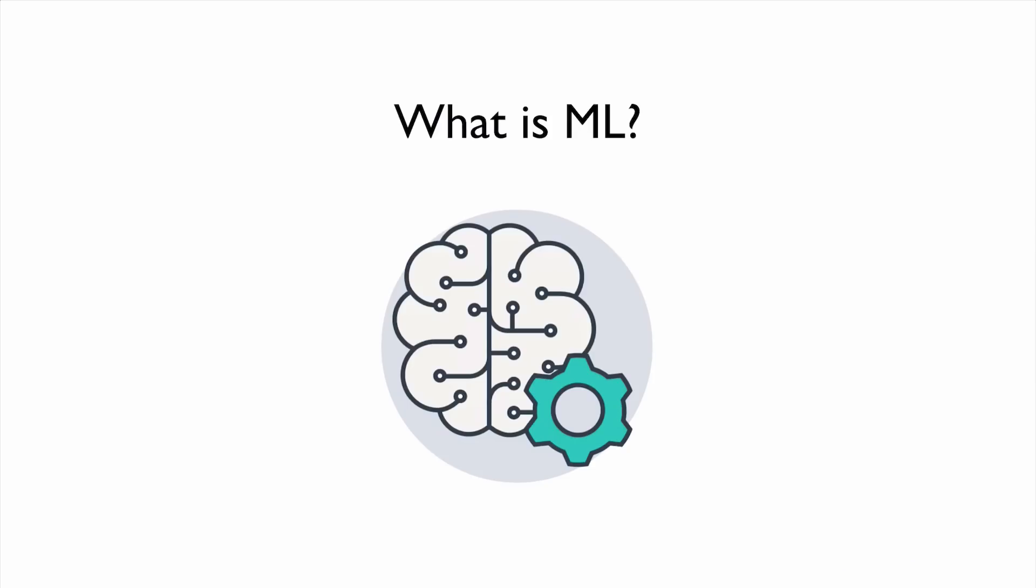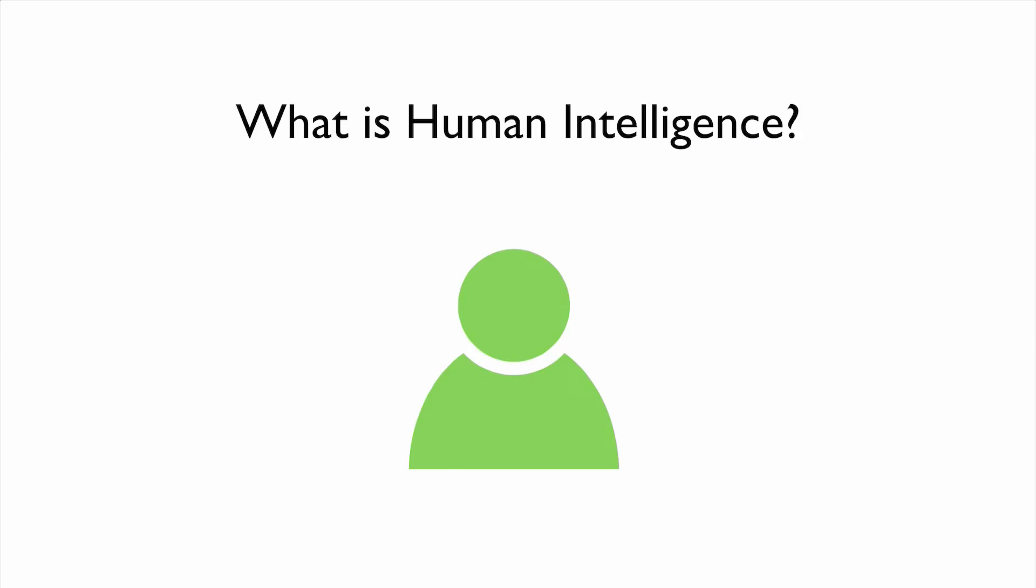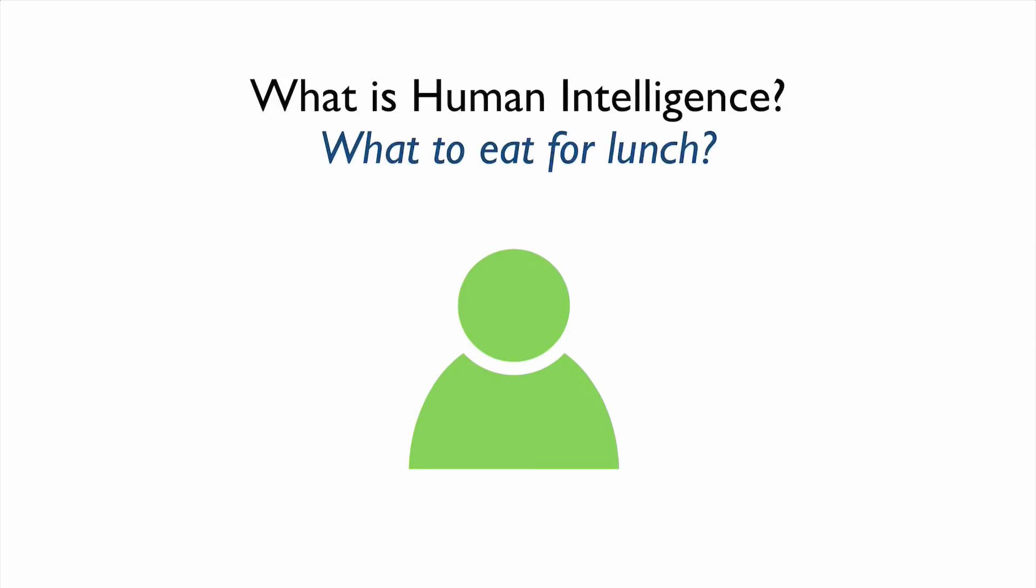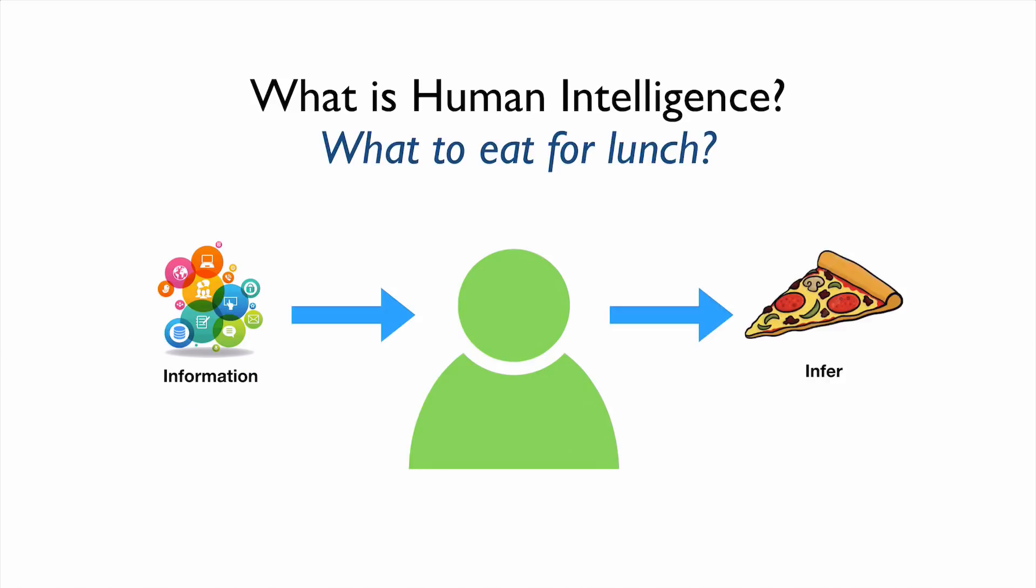What is machine learning? Before we talk about machine learning, let's think about what is human intelligence. Using our intelligence, we make a lot of decisions. But how are we going to do this? For example, lunch. What do you want to eat for lunch? How can we make this decision? Usually what we do is we get some information, like historical information. What did we like or what we didn't like. Using all this information, we can try to decide what to eat for lunch. For example, here, let's eat pizza.